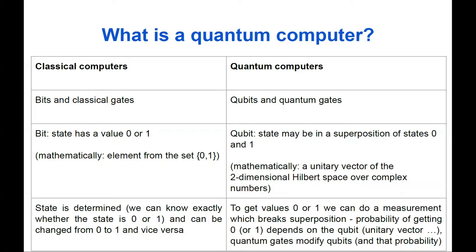I'll try to explain some basics and give you good intuitions. One more difference: in classical bits the state is determined — we know exactly whether it's 0 or 1, and you can change it. But in quantum computers, to get values 0 or 1 we perform a measurement which breaks superposition — the qubit is no longer between 0 and 1. The result of measurement may not be deterministic; we may just have a probability of getting 0 or 1 depending on the qubit state. Quantum gates modify qubits and modify that probability of getting 0 or 1 after measurement.